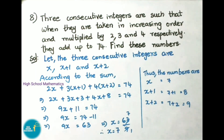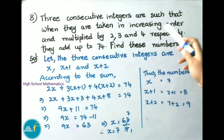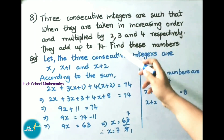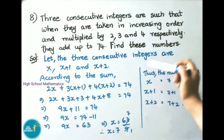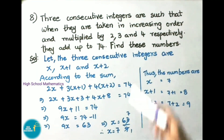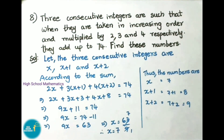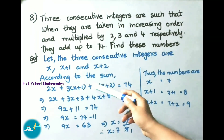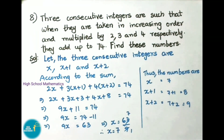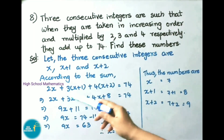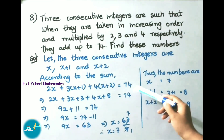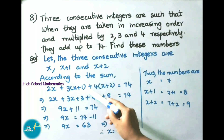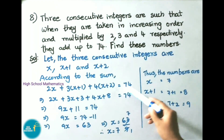See now question number 8: 3 consecutive integers are such that when they are taken in increasing order and multiplied by 2, 3 and 4 respectively they add up to 74. Find these numbers. Let the 3 consecutive integers be x, x plus 1 and x plus 2. According to the sum, these integers are multiplied by 2, 3 and 4 and they are equal to 74. So: 2x plus 3 into x plus 1 plus 4 into x plus 2 equals to 74.